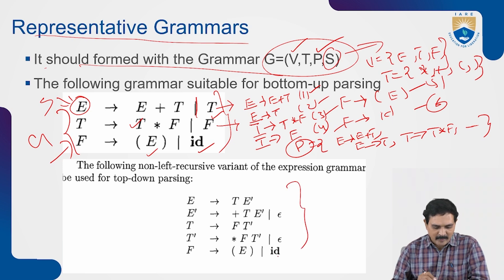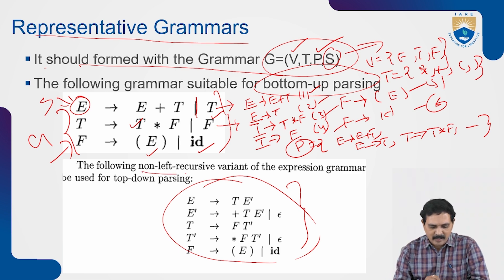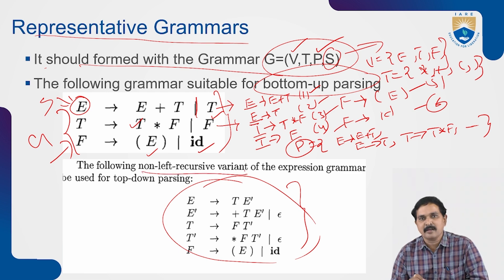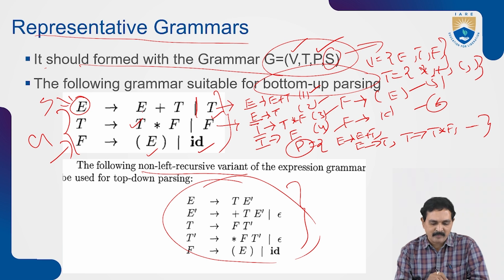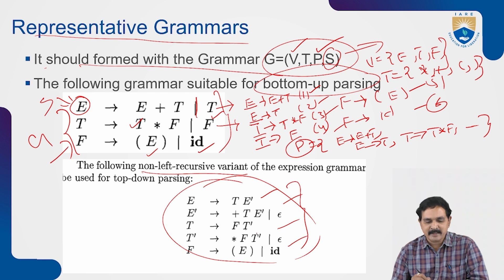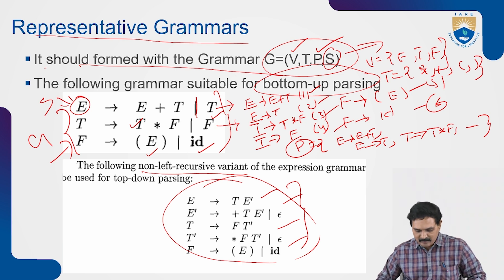For bottom-up parsing, generally you follow one kind of grammar representation, and for top-down parsing you get another kind of representation — specifically a non-left-recursive form. How to convert one into the other is a separate topic to be discussed in coming classes.